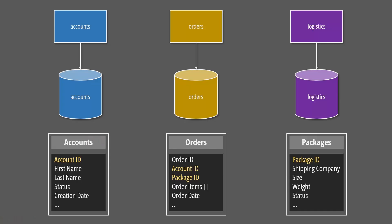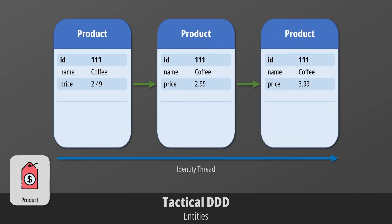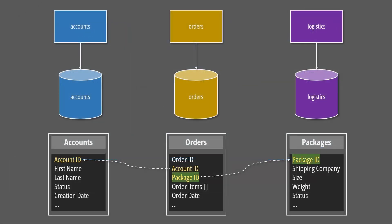So how can we combine data from multiple domains and keep it consistent? One approach is to link the different subdomains through the identifiers of their entities. As we learn from DDD, the identity is constant for the entire lifecycle of an entity, making it a low-maintenance relationship. Once we link an order to a package through their identifiers, we will never have to update the relationship because the IDs never change.